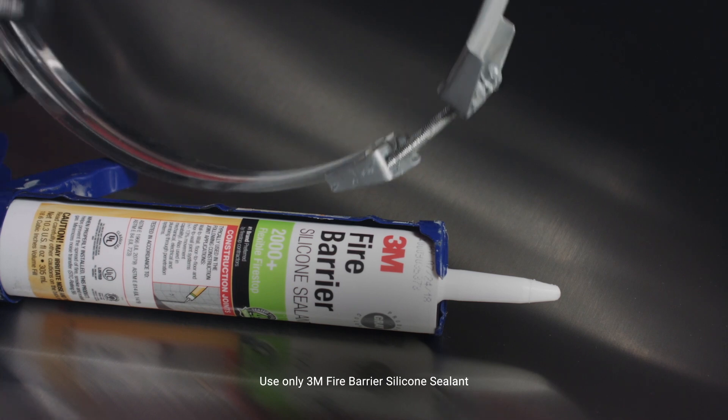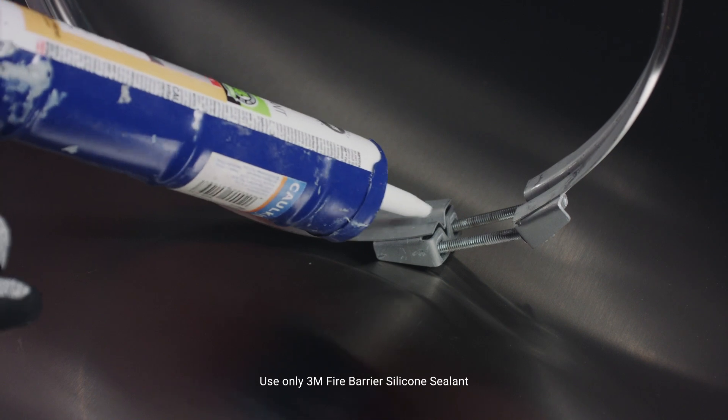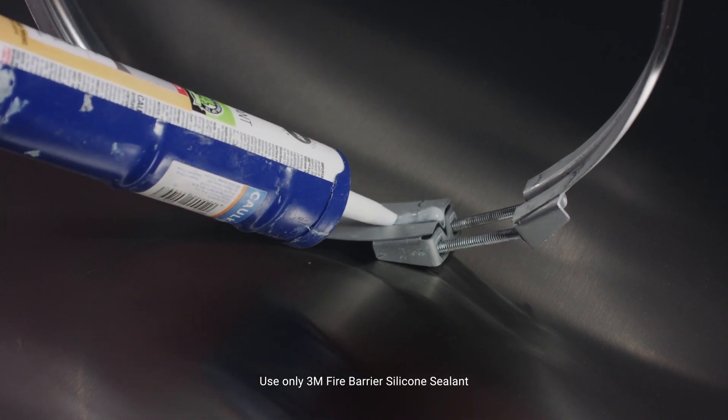Apply a continuous bead of sealant onto the inside of the V-band, all the way around the band. The sealant should completely fill the V-section.